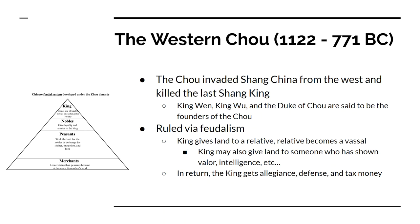We also have the Western Zhou — also sometimes written as Zhu — and they're going to invade Shang China from the west. They kill off the last Shang king, and they're going to invent Chinese feudalism. There are a lot of similarities between Chinese feudalism and European feudalism, with some differences. The king is at the top; he gives land to a relative known as a vassal. In return, the king gets allegiance, defense, and tax money. In the feudal hierarchy, the king is at the top, then nobles, then peasants, and merchants are actually at the bottom because they're seen as stealing money from other people.